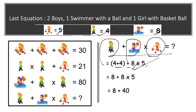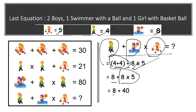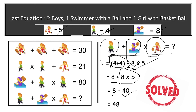We solve using BODMAS rule — first brackets, then division, multiplication, addition, and subtraction. So 4 plus 4 equals 8, brackets open: 8 plus 8 times 5. Doing multiplication first: 8 times 5 equals 40, then 8 plus 40 equals 48. This is our final answer — the puzzle is solved!